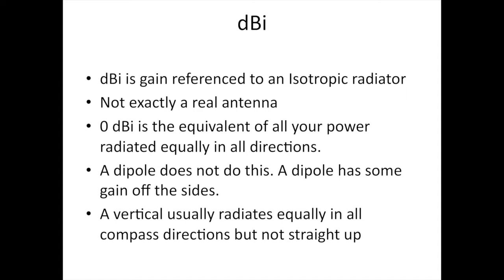I like to use the dBi term. dBi is gain referenced to an isotropic radiator. Not exactly a real antenna. 0 dBi is the equivalent of all your power radiated equally in all directions. A dipole doesn't do this. A dipole has some gain off the sides. A vertical usually radiates equally in all compass directions, but not straight up.